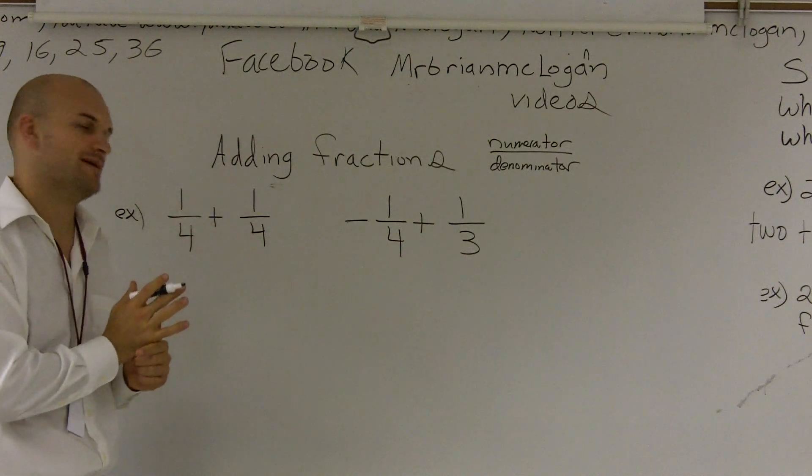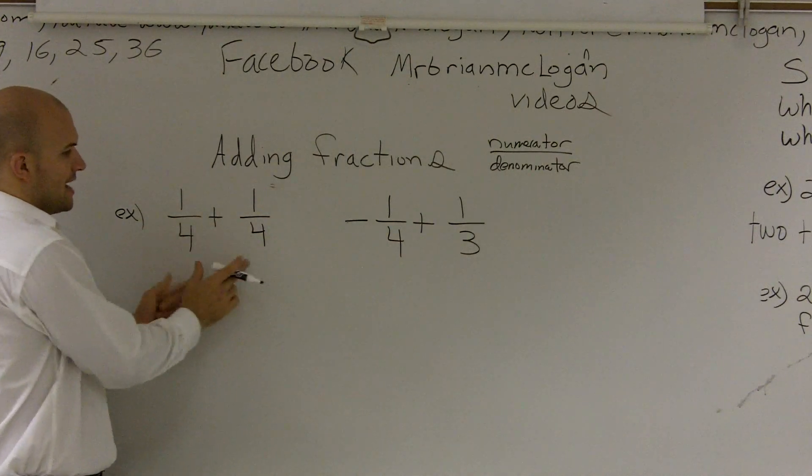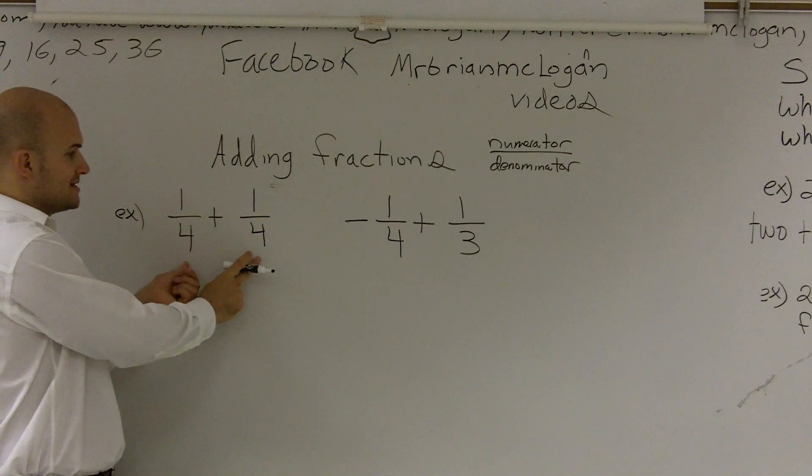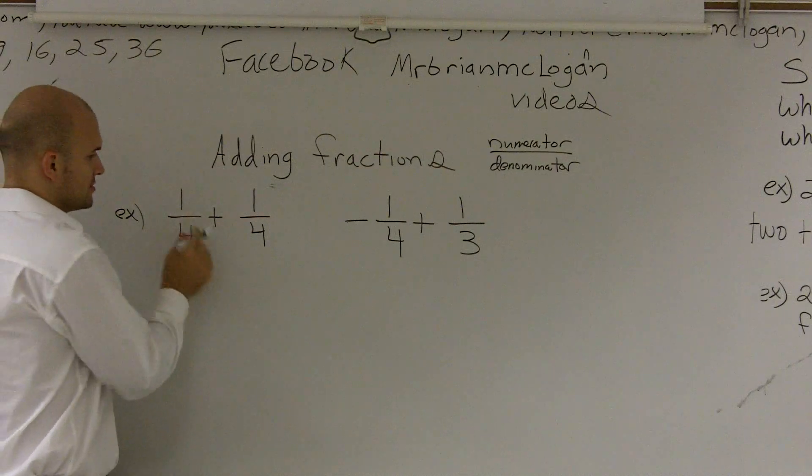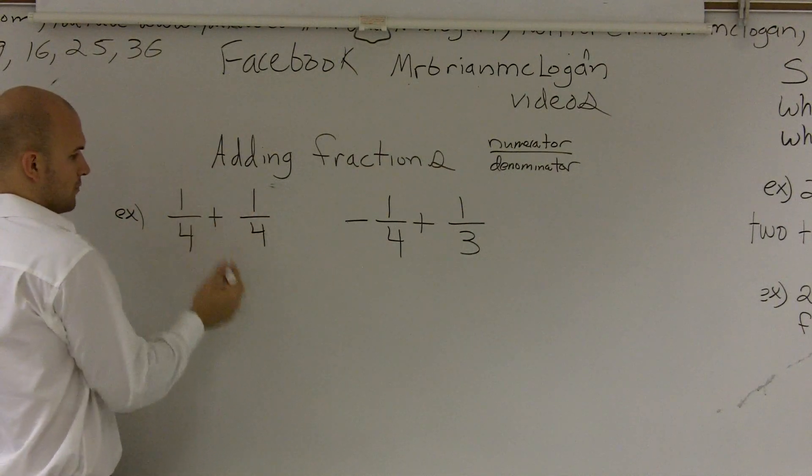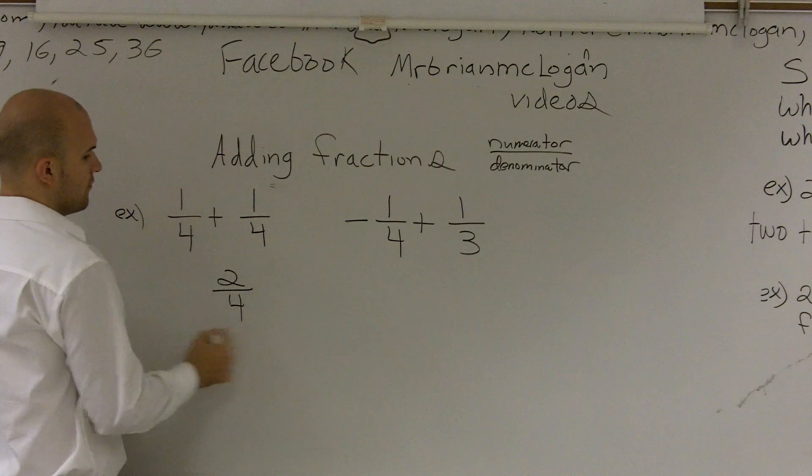And your numerator is actually what you're going to be adding. So in this case, I have a denominator that are going to be the same, since they already are the same. And then I just need to add my numerators. So therefore, 1 plus 1 is going to give me 2 fourths.